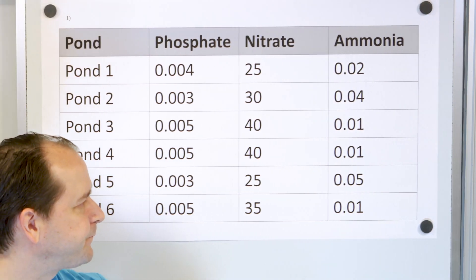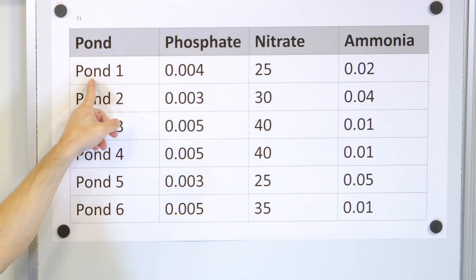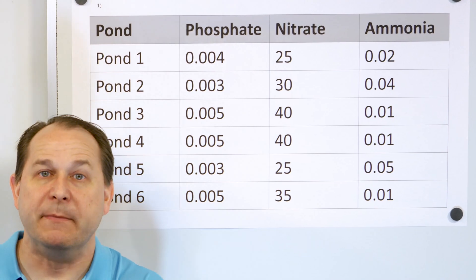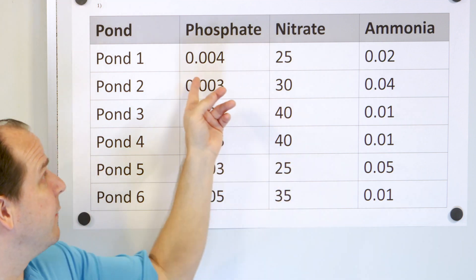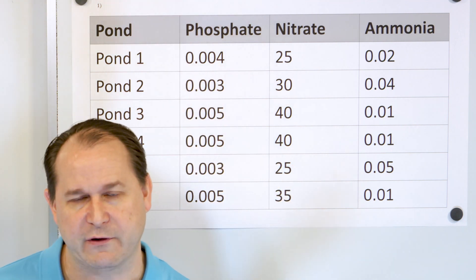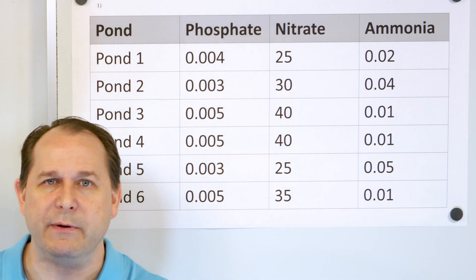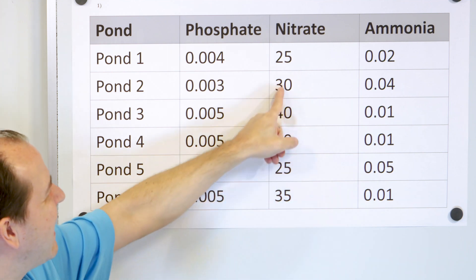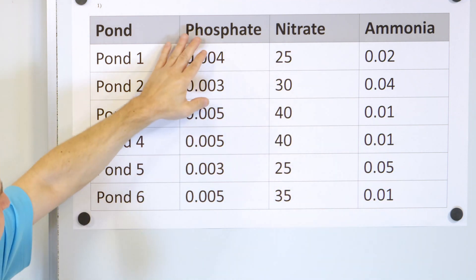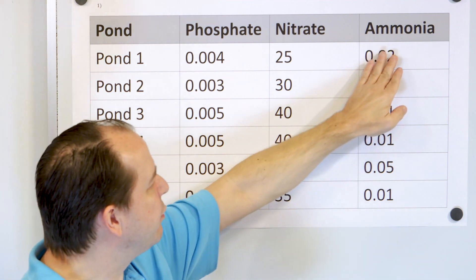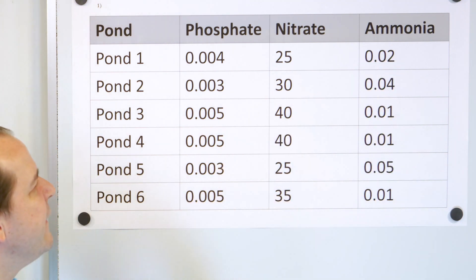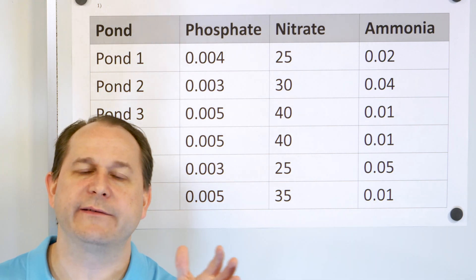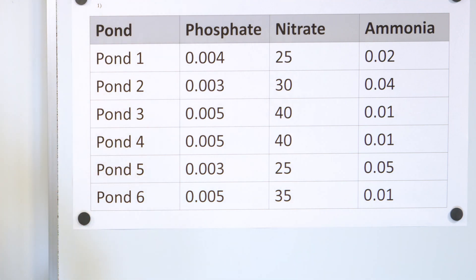Parts per million — for instance, phosphate for pond number one came out to 0.004 parts per million. So that means if you take a million drops of water, 0.004 of those drops relative to a million drops would be the amount. The nitrate levels are very high at 25 parts per million, the phosphate levels are very low, and the ammonia levels are right in between the two. It's a relative way of comparing amounts of these dissolved chemicals.